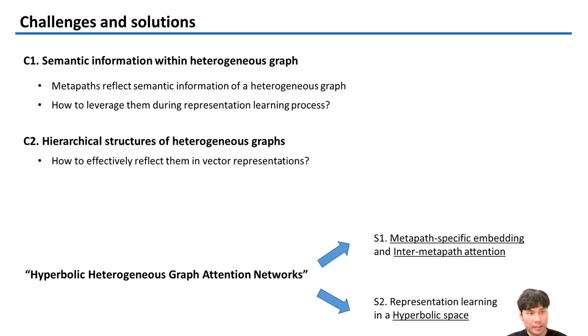To address these challenges, we propose a hyperbolic heterogeneous graph attention network consisting of two main components: one for meta-path specific embedding to embed meta-path instances, and the other for inter-meta-path attention to combine representations from different meta-paths.